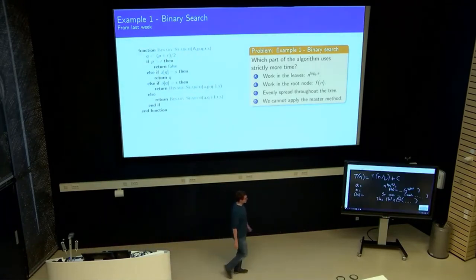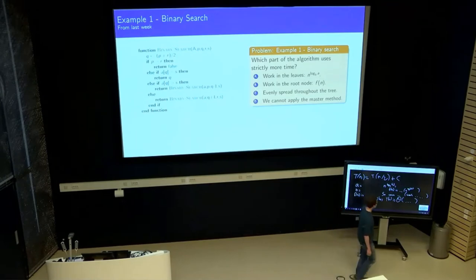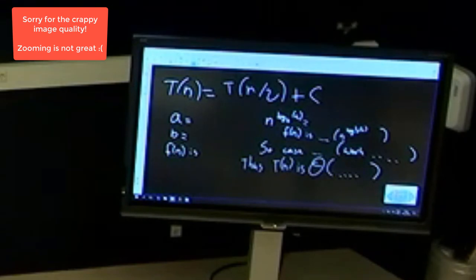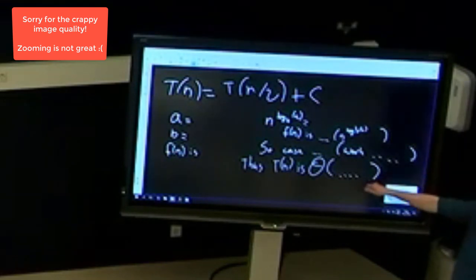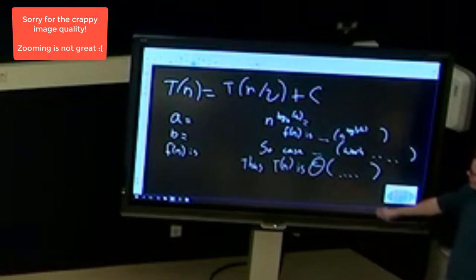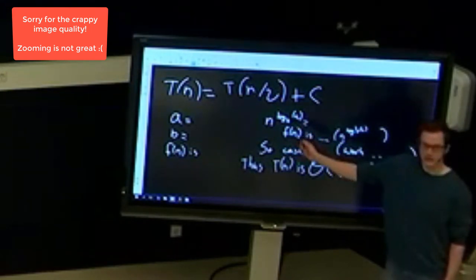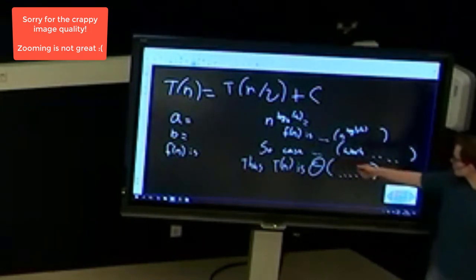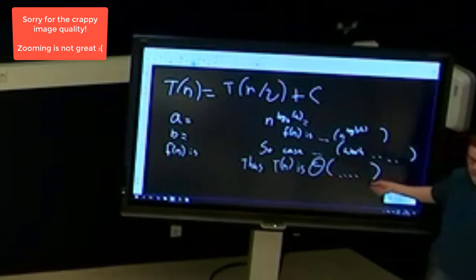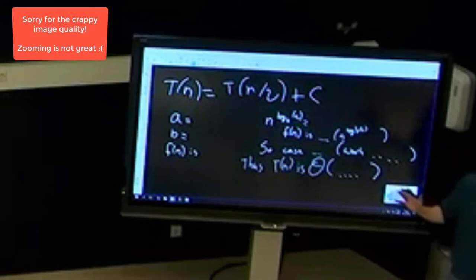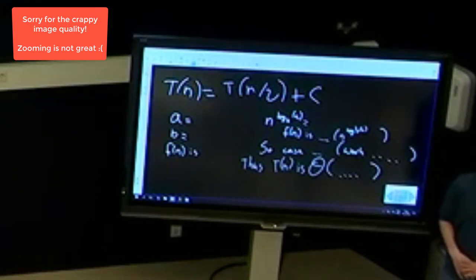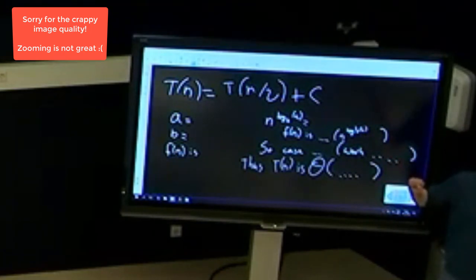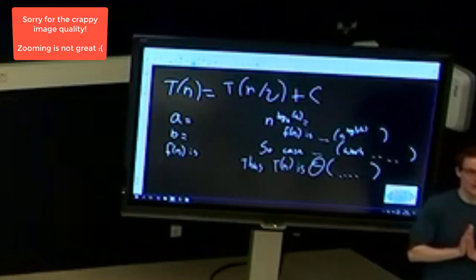But let's see if we can figure it out. What I've done already is I've written down the template that you can use for any exercise that you can actually solve using the master method. We need to identify a, b, and f(n), then we need to say something about this thing n to the power log_b of a, then we need to say whether f(n) is bound by this thing in some way. We can conclude what case it is, and as a result we can conclude the run time, assuming of course that we can apply the master method. So if I ask you a question like this, this is roughly the way I expect your answer to look like, and if you all make it look like this, that would make grading a whole lot easier.